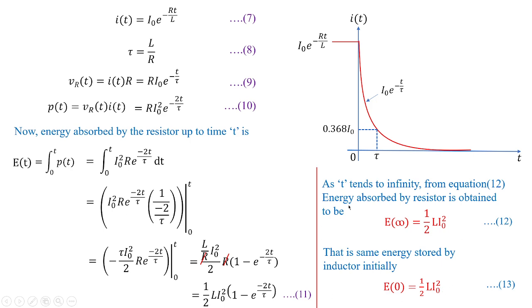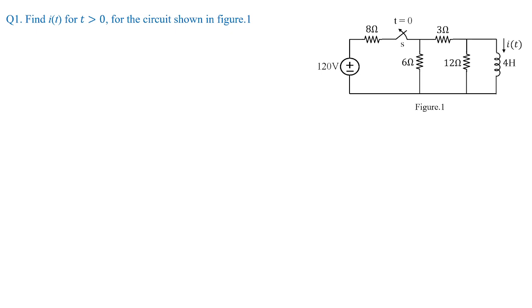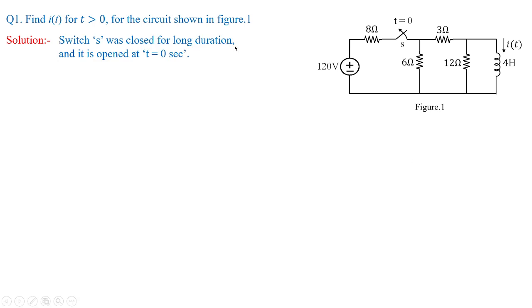This completes the analysis of a source-free RL circuit, where the charged inductor dissipates its energy through the resistor. Now for Problem 1: from Figure 1 we need to find I(t) flowing through the 4-Henry inductor. The switch was closed initially and opened at t = 0, so we must keep in mind that the switch was closed for a long duration before t = 0.